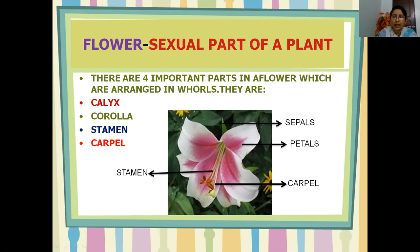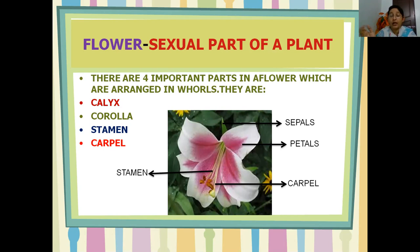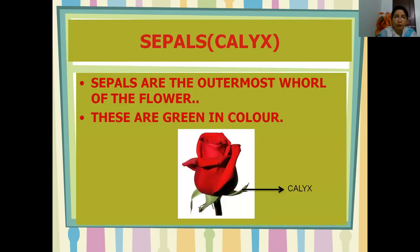A plant has various parts majorly categorized into two: the vegetative part and the sexual part. The sexual part of the plant is the flower, as it has male and female reproductive organs. A flower has its parts in whorls — there are four whorls: calyx, corolla, stamen, and carpel.